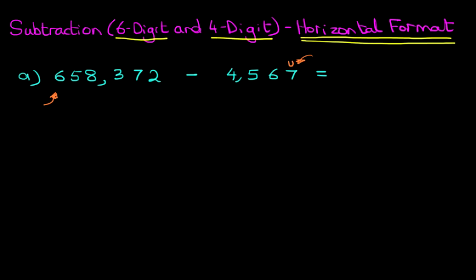We have seven units — that's the number we're subtracting. Our target is to get to two units. Now because the next number after seven which has got two units is 12, what number added to the seven is going to give us 12? Well, the answer is five — seven plus five is 12. And because it's 12, we're carrying one over to the next column.